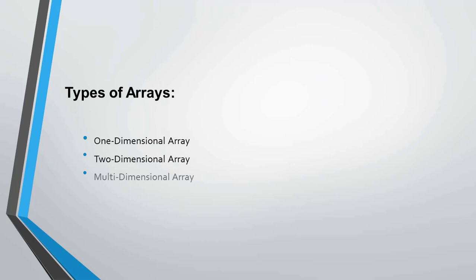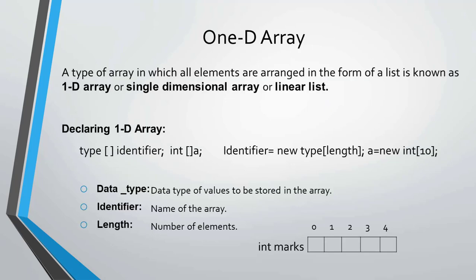How many types of arrays are there? We have three types of arrays: one-dimensional array, two-dimensional array, and multi-dimensional array. A one-dimensional array is a type of array in which all elements are arranged in the form of a list.